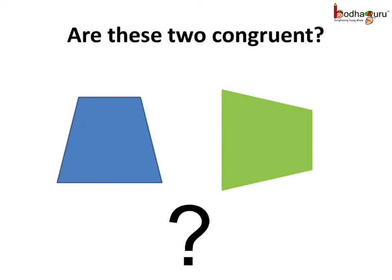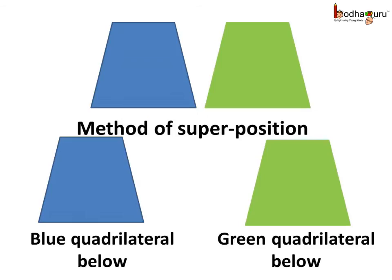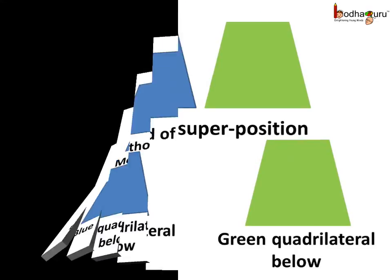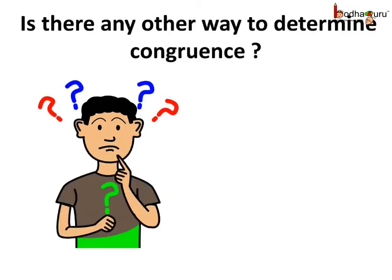Are these two figures congruent? If we rotate the second quadrilateral, which is green in color, and then place it over the first quadrilateral, they will coincide with each other exactly and cover each other so that the other is not visible. So superposition is one method.